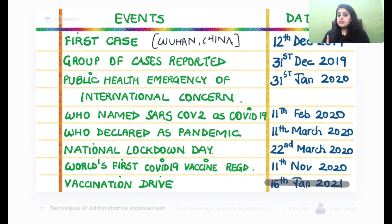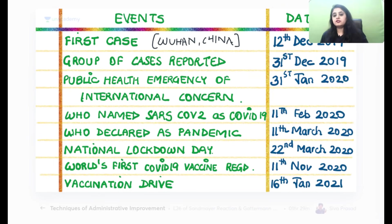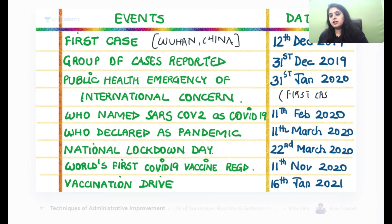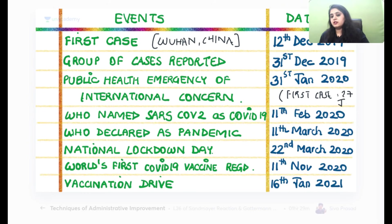The vaccination drive of Covishield and Covaxin started in India on 16th January 2021. Regarding the first case in India, there is controversy — some sources say 27th January and some say 31st January. If the question has only one January date, select that; if both 27th and 31st are options, go for 27th January. I didn't include it because the date varies across literature.